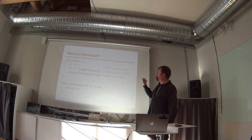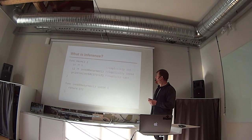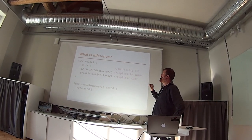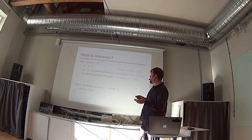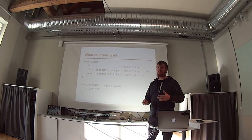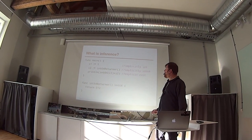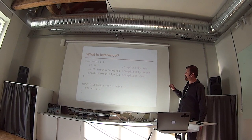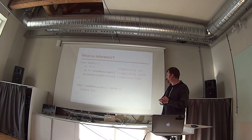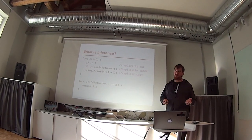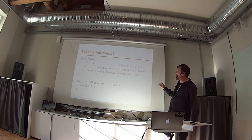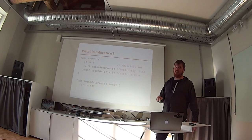What is inference? Every Go program starts with a main function — that's common in many languages. In this simple example, i1 is declared and assigned at the same time using the inference operator. You don't even have to write the type, because 1 is an integer literal, so the compiler concludes that i1 is an integer. i2 is inferred from the result of running a function called int64Returner, which returns an int64. So i2 will be of type int64. Interestingly, if I wanted to add those two numbers together, I have to cast i1 to int64, otherwise the compiler will be angry.